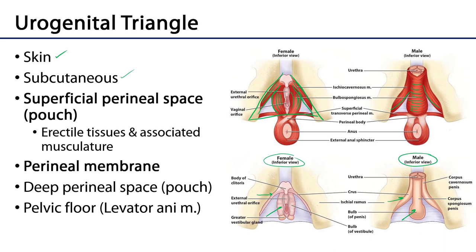The superficial perineal space is divided from the deep perineal space by the perineal membrane. That deep perineal space is a very irregularly shaped space between the perineal membrane and the muscles of the pelvic floor, or the levator ani muscles.